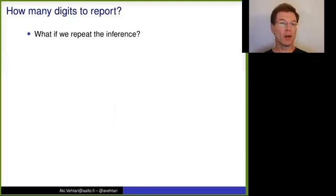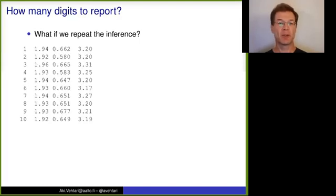Now if we have decided that one or two digits would be enough even for the exact inference, but when we are using Markov chain Monte Carlo, the inference is stochastic depending on the random seed. And if we repeat the inference, we get slightly different results. I'm intentionally showing now first 3 digits. And then you can see there's a lot of variation in the last digit.